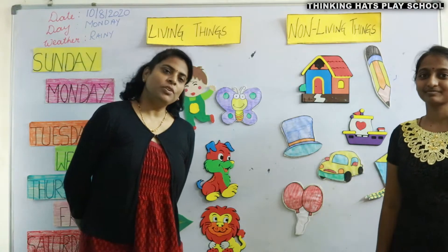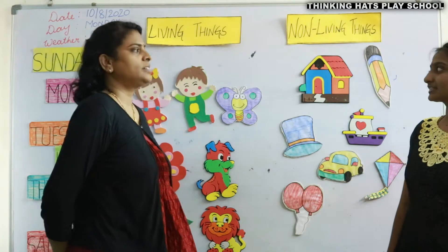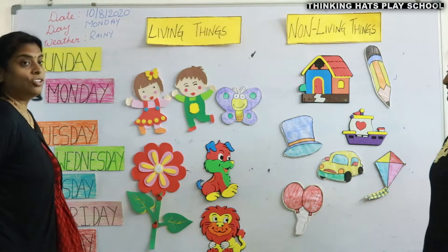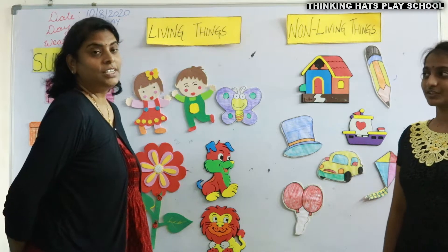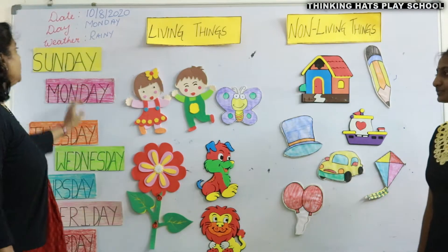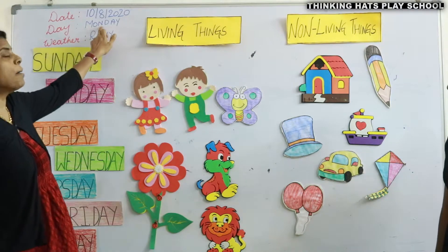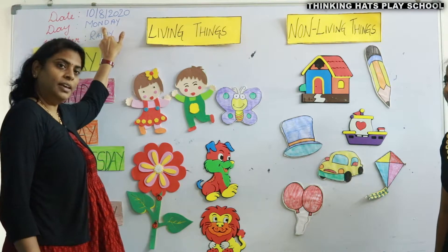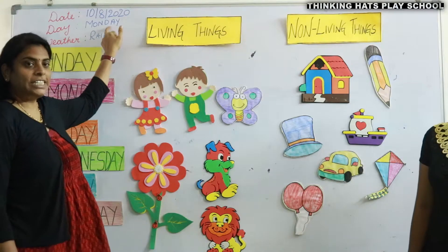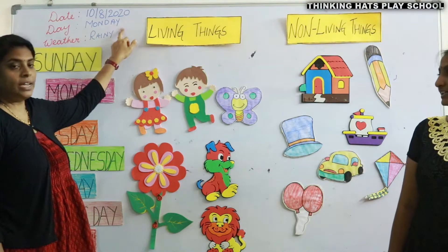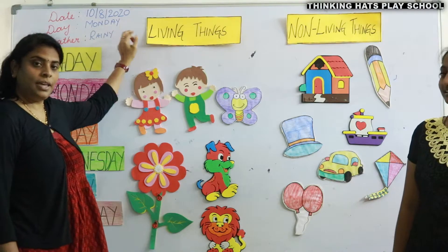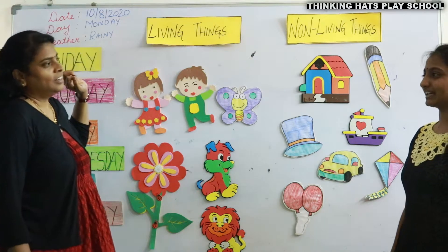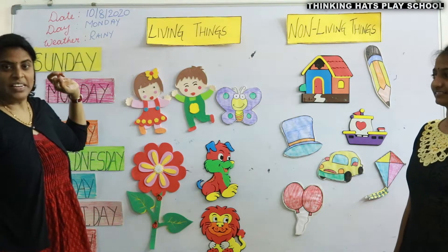Can you tell me what is today's date? Jyoti, what is today's date? It's 10th of August. 10th of August and the year is 2020. And the day is Monday. Can you tell me how you spell Monday? M-O-N-D-A-Y, Monday. And the weather — is it sunny Jyoti today? No, it's rainy. It's rainy today.